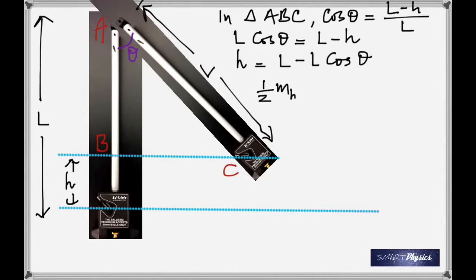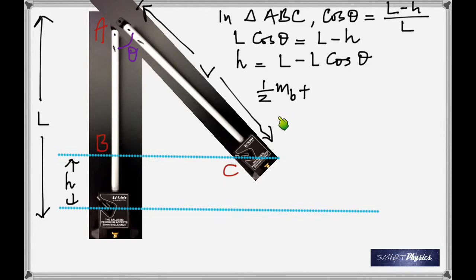Rearranging: l·cos θ = l - h. So h = l - l·cos θ. That is the equation for height. From your measured angle θ and the known length l, you can find the height.